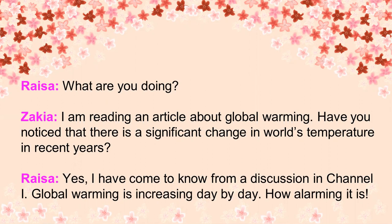In the dialogue, full stop, comma, note of exclamation, and note of interrogation have been used as punctuation marks. Now the question is: what is punctuation? To make the meaning of a sentence clear, some tools or signs are used in a sentence. These tools or signs are called punctuation marks. In the English language, the main punctuation marks are of 11 kinds.